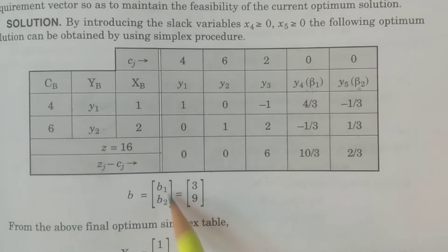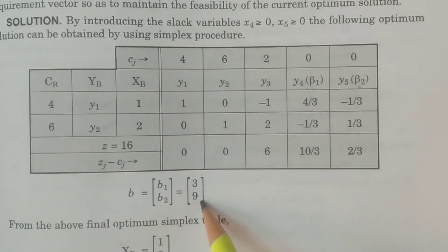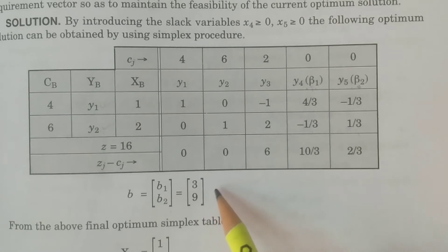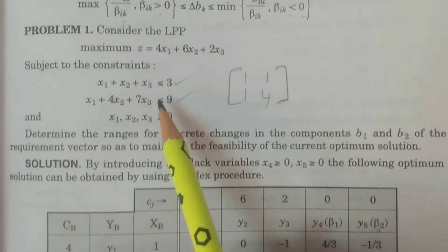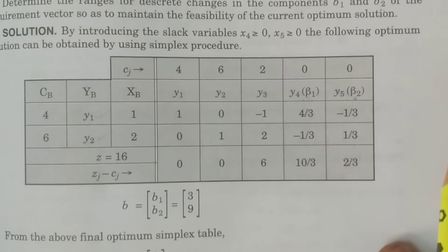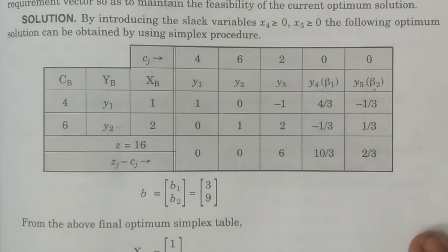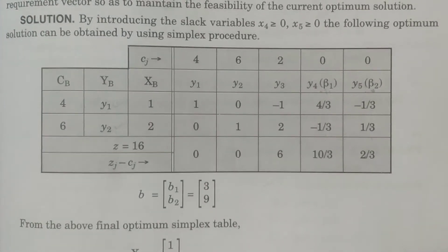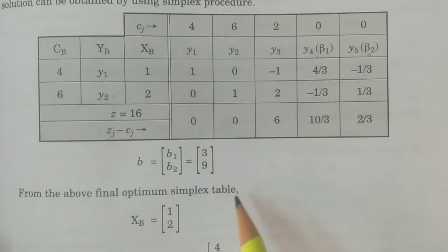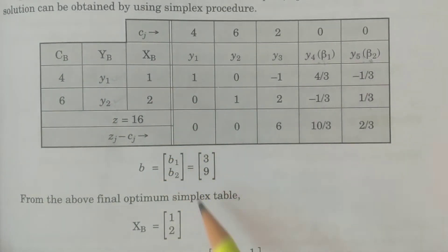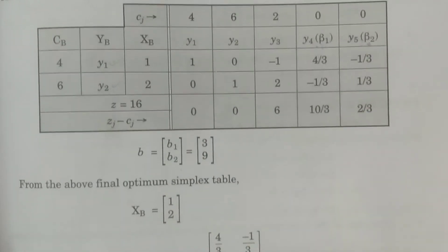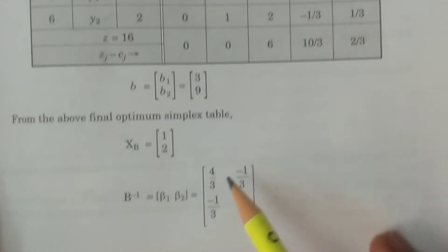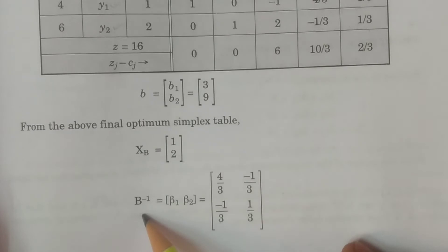B is equal to [B1, B2], that is 3 and 9 — the original values of B of the old linear programming problem. If B1 and B2 change, what would be the solution without changing the optimality? The final optimum simplex table gives XB equal to 1 and 2 — that is the solution of the final optimum simplex table of the old LPP. And B inverse, beta 1 and beta 2, are the values of the inverse of matrix B, that is B inverse.